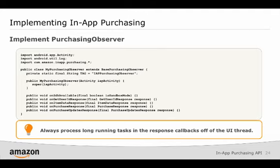This is done with a PurchasingObserver. Your app needs to implement the PurchasingObserver interface by subclassing the abstract BasePurchasingObserver. Notice the callback methods in this code snippet — we'll walk through each of these callback methods in turn. The callbacks are invoked in your UI thread; therefore, long-running tasks should be processed in a separate thread.